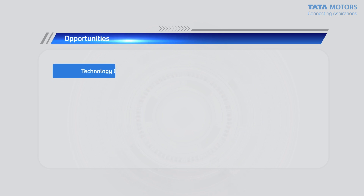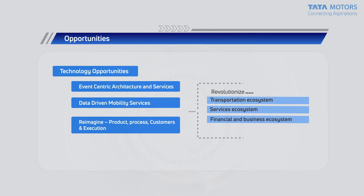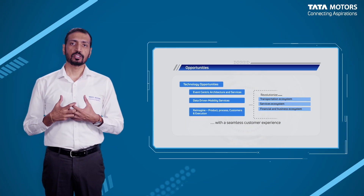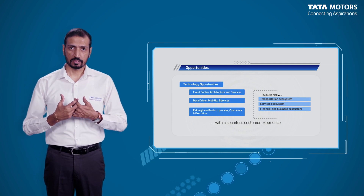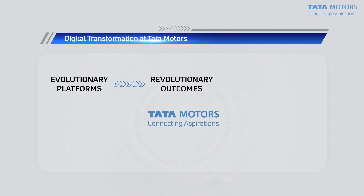Looking at key opportunities in this space: we've been working on event-centric architecture, trying to drive data-driven mobility services to our customers, and reimagining the product, the process, the customer, and the execution of all of this. If you bring all these aspects together, we firmly believe that the IT fraternity has a chance to revolutionize a whole host of things — the transportation ecosystem, the service ecosystem, and even the financial and business ecosystem — all while retaining a very seamless customer experience. These opportunities are what we are really looking at in trying to drive an evolutionary platform.